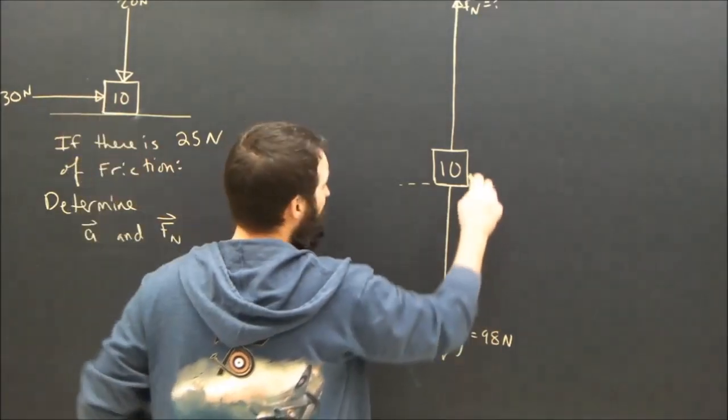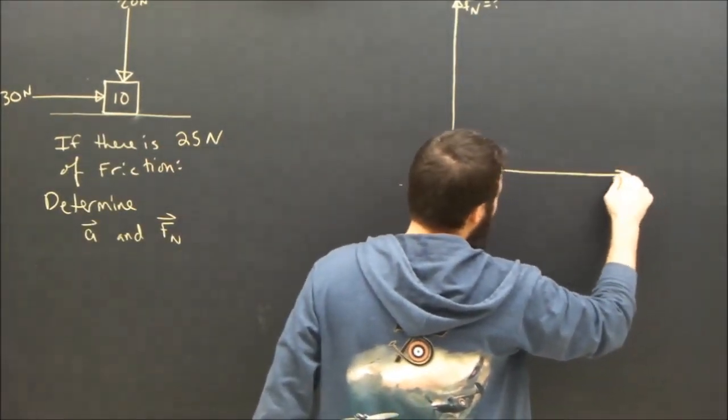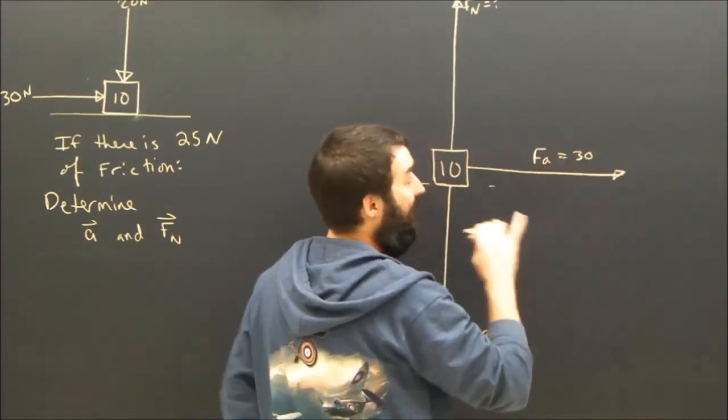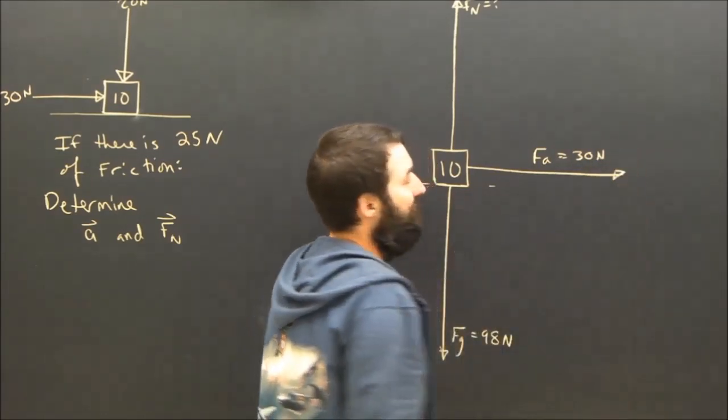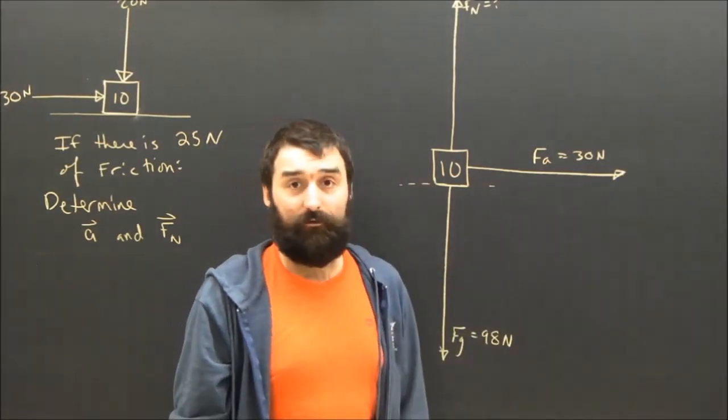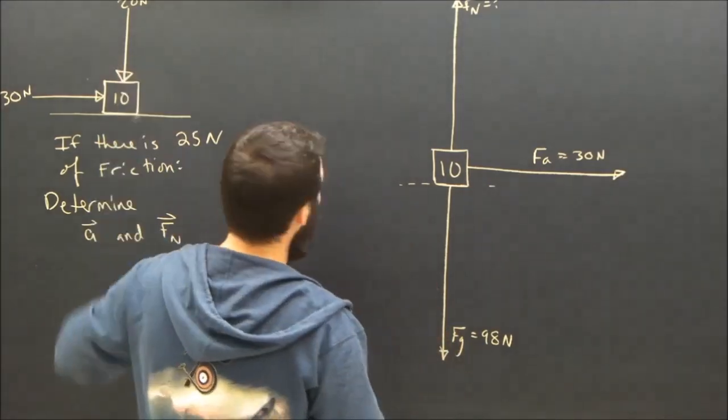What other forces are there? Well, there's an applied force to the right. I really always like to draw my applied forces coming out of the free body diagram, so I don't make any silly mistakes. FA, I'm going to call that 30 newtons. Another force, there's a 20 newton force down.